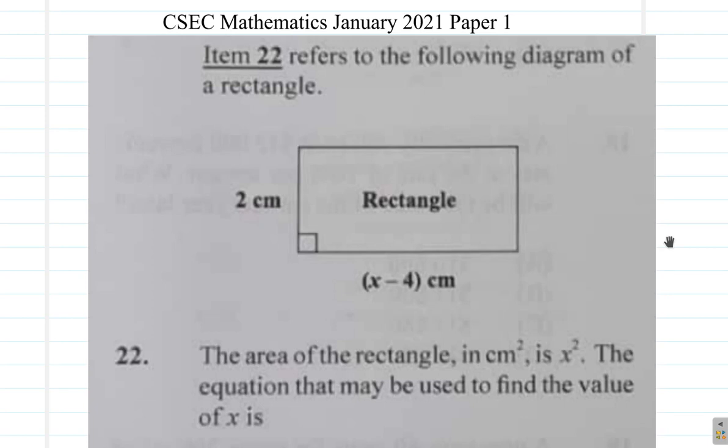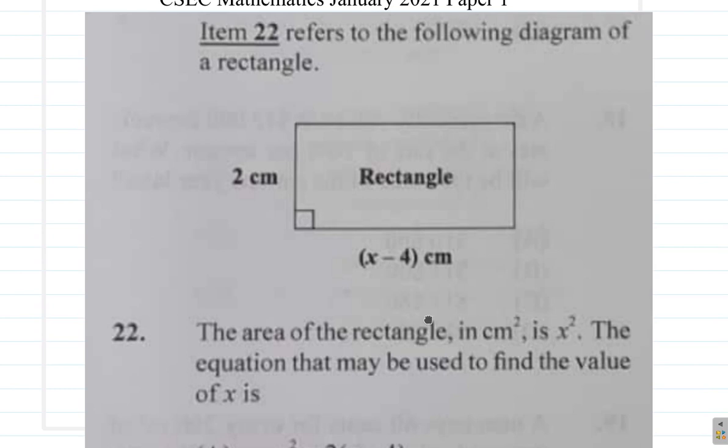Alright people, we are at question 22. Item 22 refers to the following diagram of a rectangle and we have the rectangle right here. It's 2 cm high, x minus 4 cm wide.